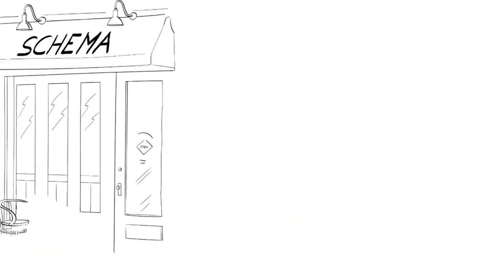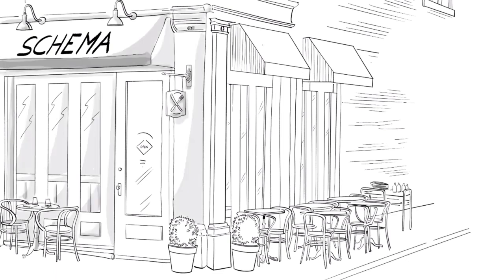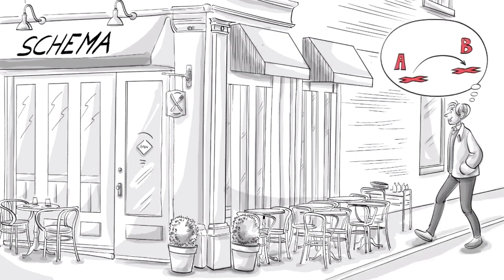A schema is a generalization of past experiences that forms a scripted pattern of thought. For example, we all have a specific process in mind when we think about going to a restaurant.